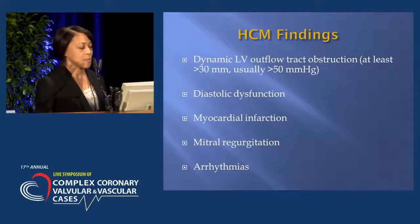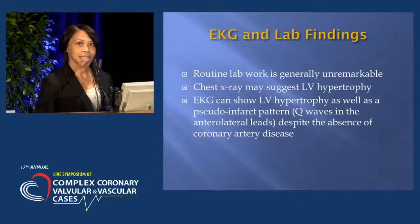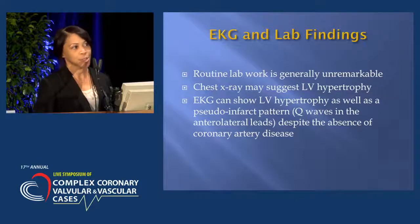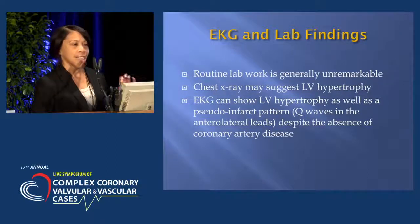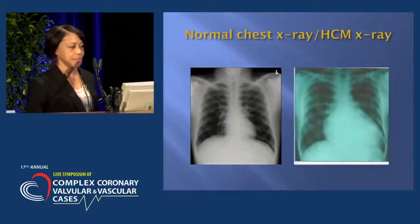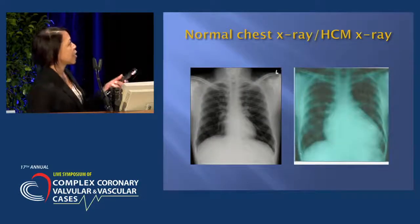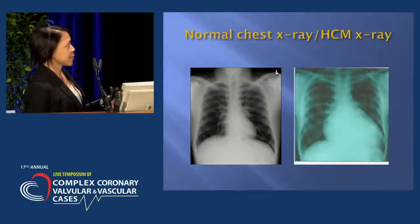We also have NMI, mitral regurgitation, and arrhythmias. Routine lab work is generally normal. Chest X-ray may suggest left ventricular hypertrophy, but it may also be normal. The EKG can show left ventricular hypertrophy as well as a pseudo-infarct pattern, where you have Q waves in the anterolateral leads despite the absence of coronary artery disease. On the left we see the size of a normal heart, and on the right, the heart with hypertrophic cardiomyopathy — you can see the difference.